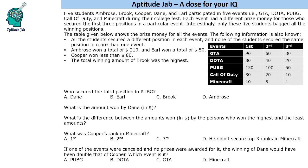Hello everyone, welcome to Aptitude Jab. This set says that there are 5 students who participated in 5 events during their college fest. Each event has a different prize money for those who secured the first 3 positions in a particular event. This is the prize money for the first, second and third positions. Only these 5 students took all the winning positions.